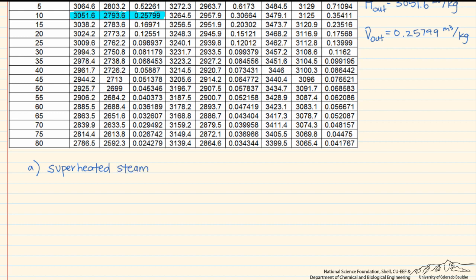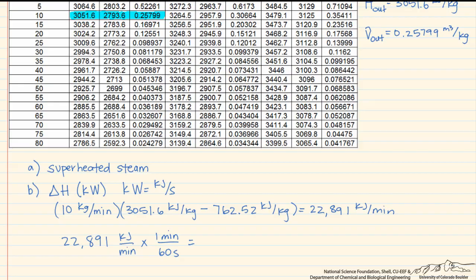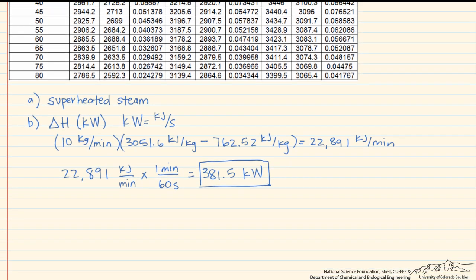Now we need to find the change in enthalpy. We're not looking for specific enthalpy, but the overall enthalpy change in kilowatts. We figure this out by taking the mass flow rate, 10 kilograms per minute, and multiplying it by the change in specific enthalpies, giving 22,891 kilojoules per minute. Since kilowatts are kilojoules per second, we convert from minutes to seconds, and we get 381.5 kilowatts — the change in enthalpy of the water.